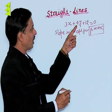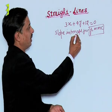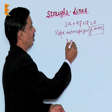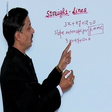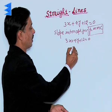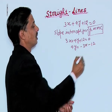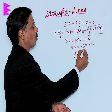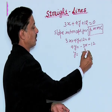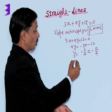We will convert this in the slope-intercept form by writing 3x plus 4y plus 12 equals 0. If 3x and 12 are shifted, it will be 4y equals minus 3x minus 12, or y equals minus 3 upon 4 x minus 12 upon 4.